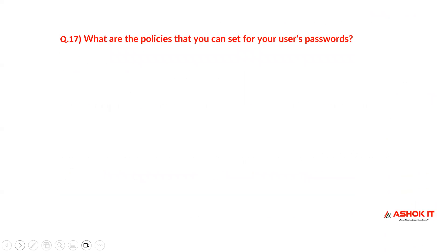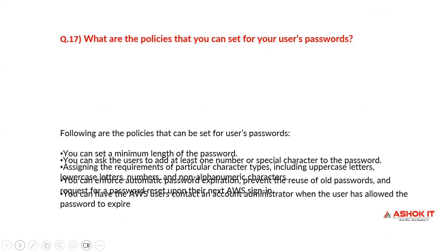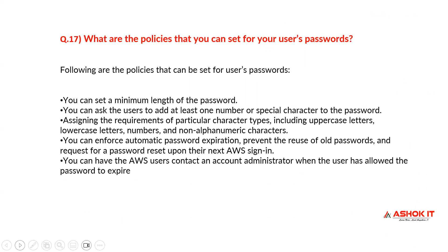What are the policies that you can set for your users' passwords? You can set a minimum length of password, require the user to add at least one number or special character, and assign requirements for particular character types including uppercase letters, lowercase letters, numbers, and non-alphanumeric characters. You can also enforce automatic password expiration, prevent reuse of old passwords, request a password reset upon the next AWS sign-in, and have AWS users contact an account administrator if they have allowed their password to expire.